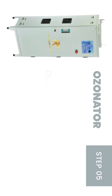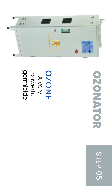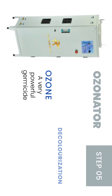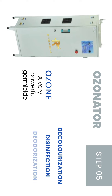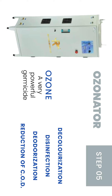The next process takes place in the ozonator, which consists of ozone — a very powerful germicide. This destroys most airborne bacteria and is extremely effective for decolorization, disinfection, deodorization, and reduction of COD, because of its strong oxidizing capability.